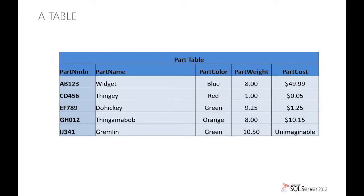This is a simple visualization of how you can conceive a table. This is a simple part table with five columns: part number, name, color, weight, and cost. Part number is chosen as the primary key — shown slightly darker — and it meets the requirements of being relatively small, not having inherent meaning, while all the other columns depend on it.